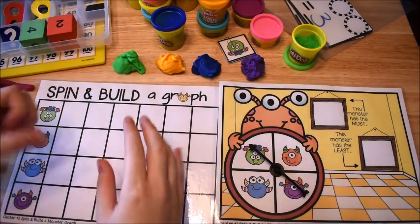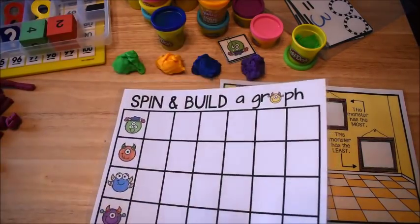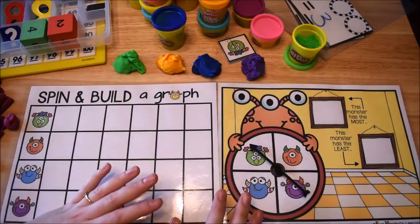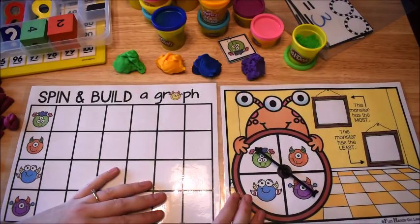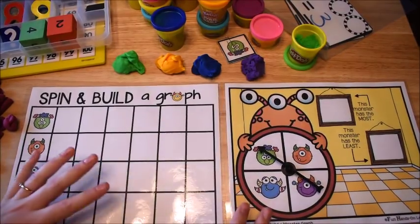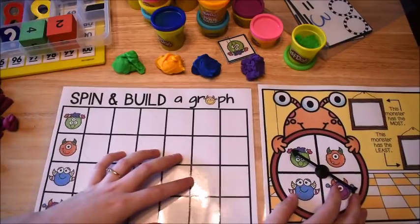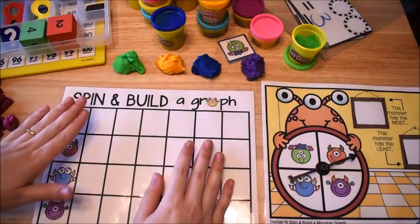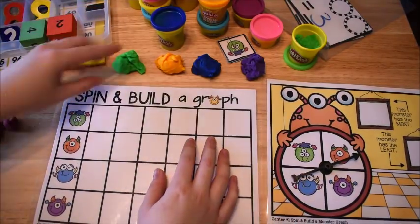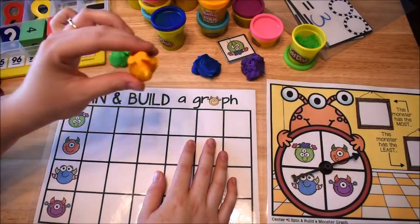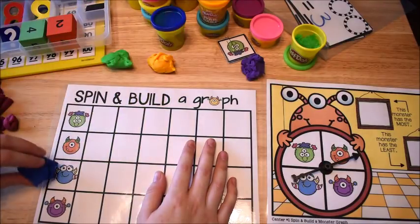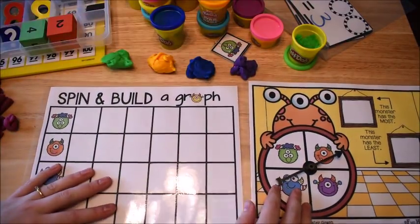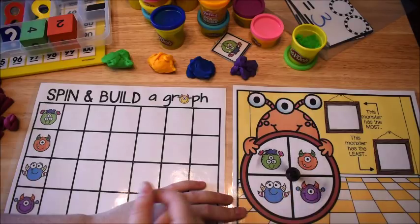Okay friends, please don't mind my fingers because I'm getting dough all over them doing this video. But for this activity, this is a graphing activity from the graphing and data unit of my early learner's math curriculum. And for this particular activity, the kids have to spin. It's building a monster graph. They have to spin and then they're going to build their graph. And now we're going to use Play-Doh to build our graph. And I have matching colors of Play-Doh for this one.